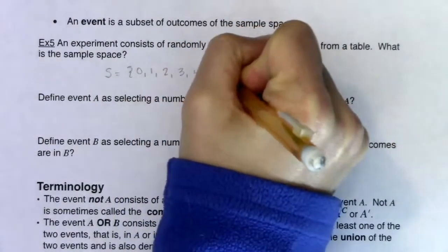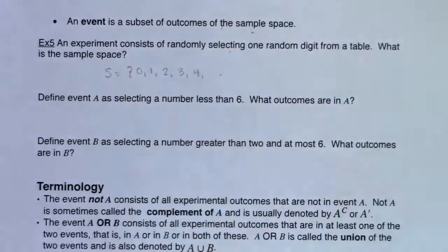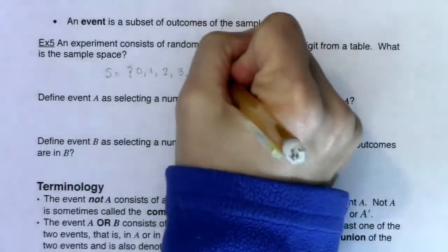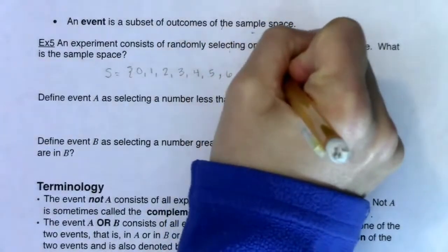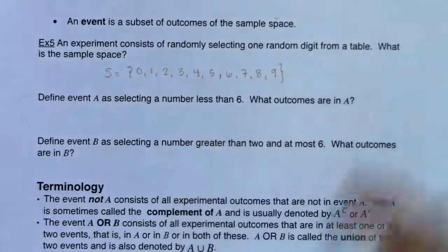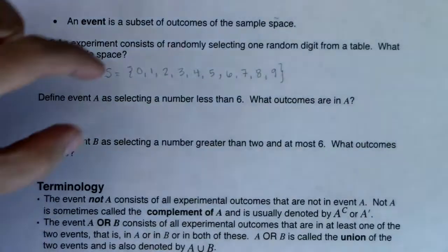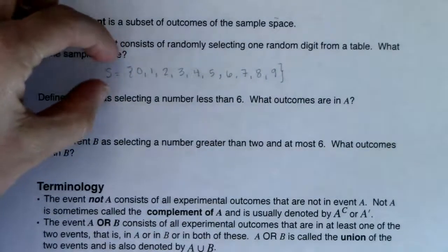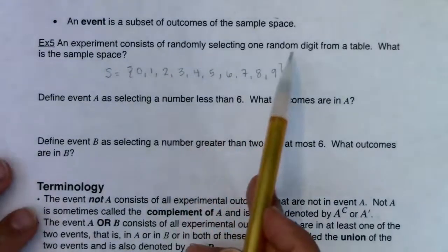Those are our ten single-digit numbers. If I were picking two digits at a time, I'd have a much larger sample space — actually a hundred outcomes, from zero-zero all the way up to nine-nine. But we're taking one digit at a time, so there are only ten options.